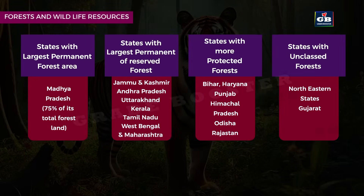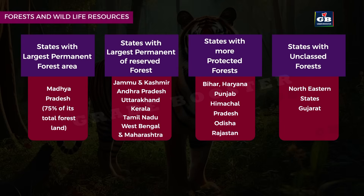Madhya Pradesh has the largest permanent forest area, at 75% of its total forest land. States like Jammu and Kashmir, Andhra Pradesh, Uttarakhand, Kerala, Tamil Nadu, West Bengal and Maharashtra have a large percentage of reserved forests. States like Bihar, Haryana, Punjab, Himachal Pradesh, Odisha and Rajasthan have more protected forests. Northeastern states and parts of Gujarat have a high percentage of unclassed forests managed by local communities.